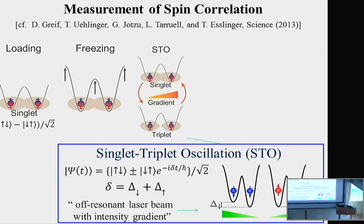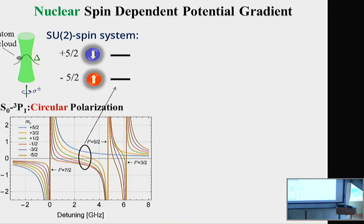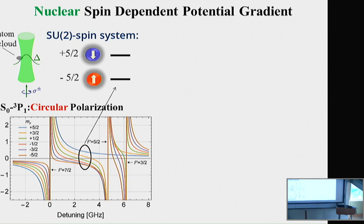In our experiment, we generate the spin-dependent potential gradient using an off-resonant laser beam with an intensity gradient, because we are working with nuclear spin and the usual magnetic field gradient is not strong enough. In the case of SU2, we apply circularly polarized light to induce a nuclear-spin-dependent light shift. Here we show the nuclear-spin-dependent light shift as a function of detuning with respect to a particular optical resonance in the hyperfine spectrum.